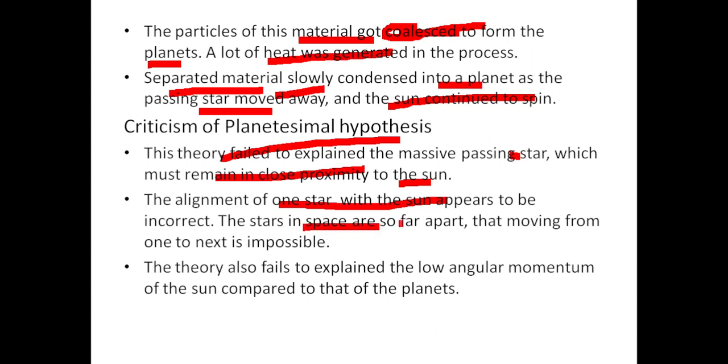The alignment of one star with the sun appears to be incorrect because the stars in space are so far apart that moving from one to next is impossible. The theory also fails to explain the low angular momentum of the sun compared to that of the planets.